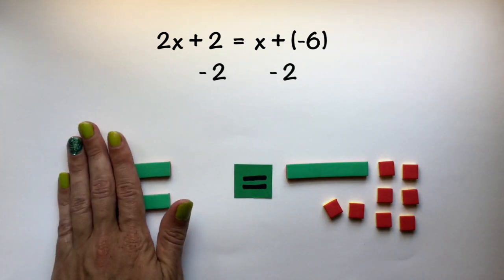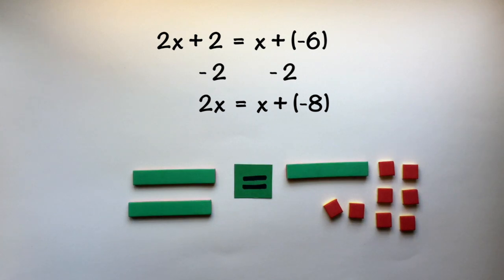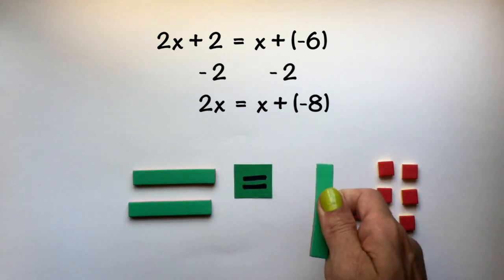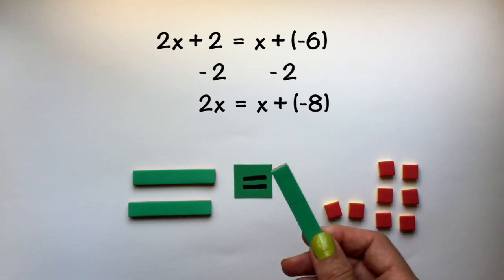And we now have 2x equals x plus negative 8. Now I need to take away this x in order to have my variables isolated on one side of the equation.